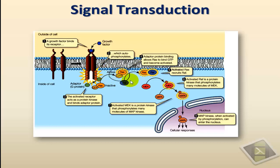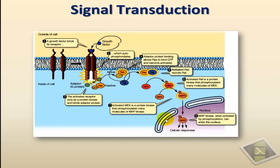In a normal signal transduction pathway of that kind, the activation of RAS would lead to the activation of another enzyme — in that case, RAF. Then RAF will activate MEK, and MEK will activate MAPK, and MAPK can go into the nucleus and activate transcription. This is another example of a signal transduction pathway, in that case of a growth factor that would result in the formation of certain proteins through activation of transcription.